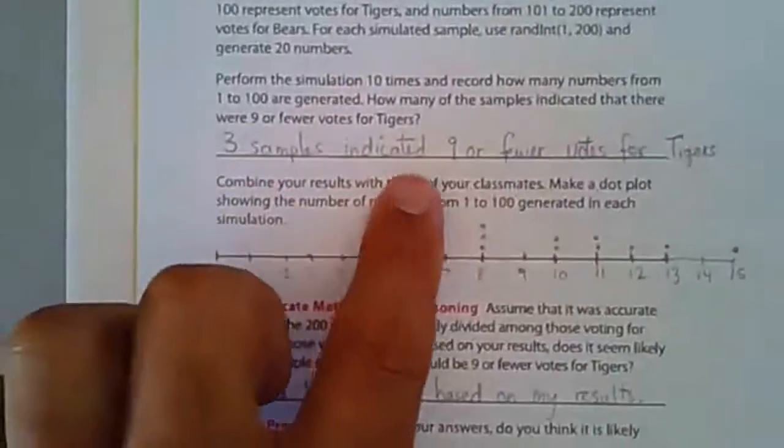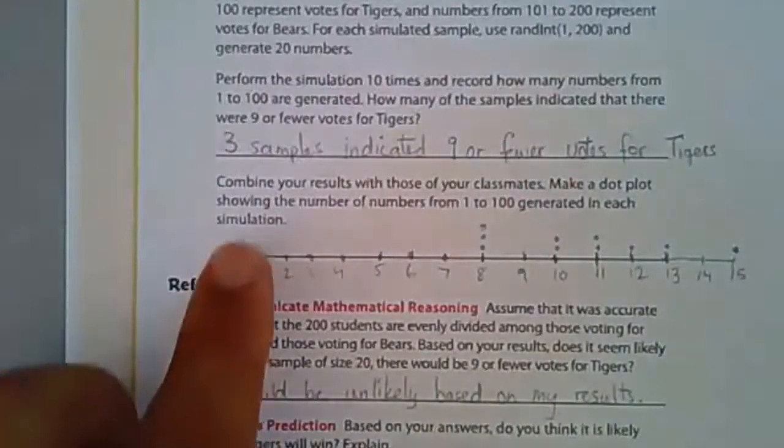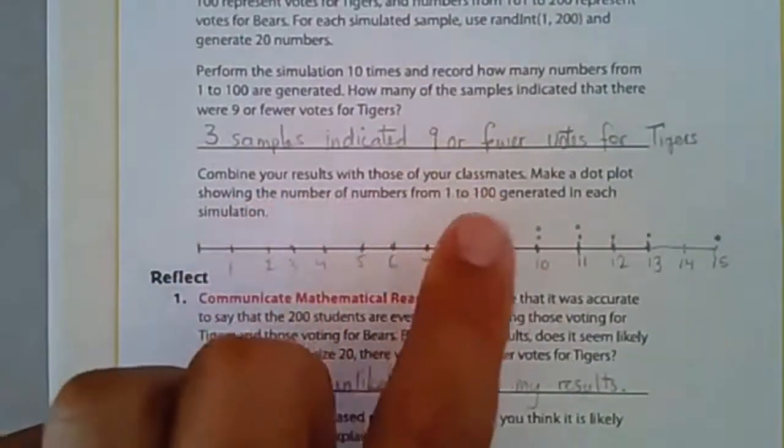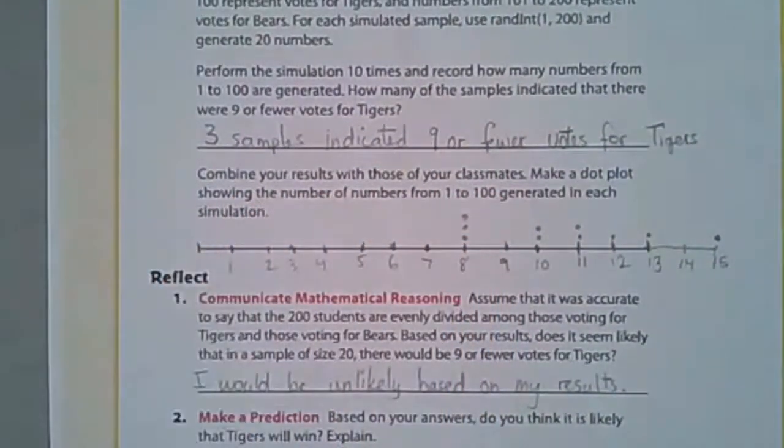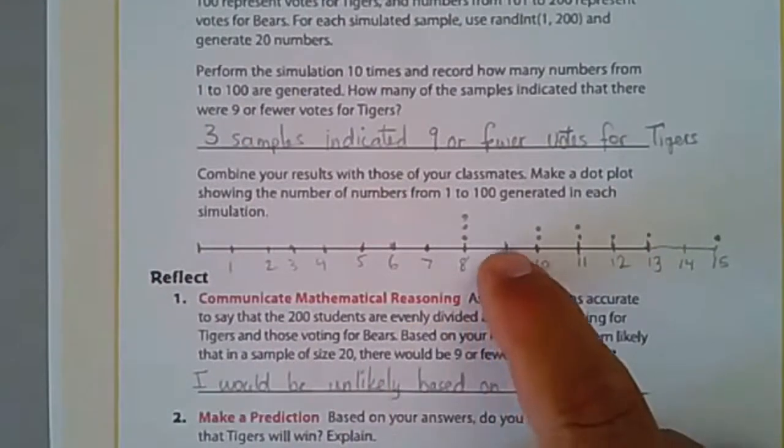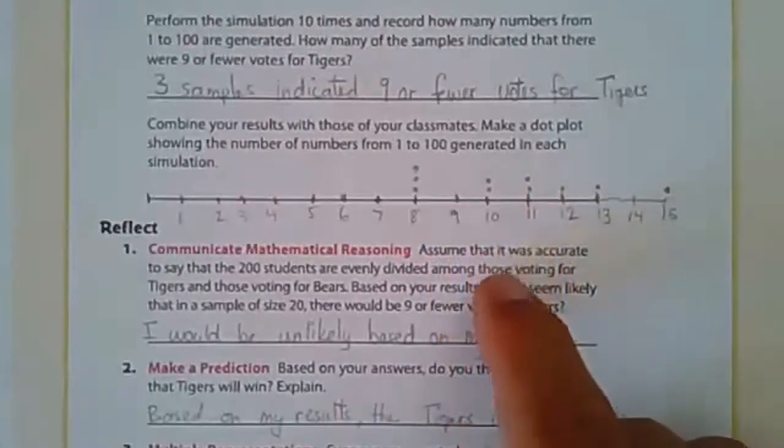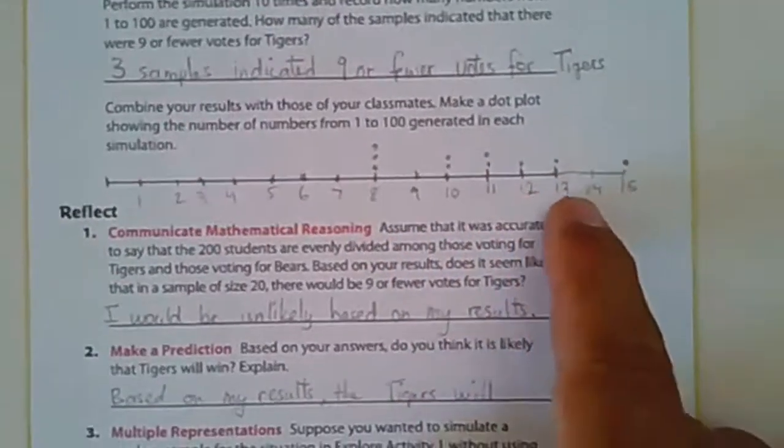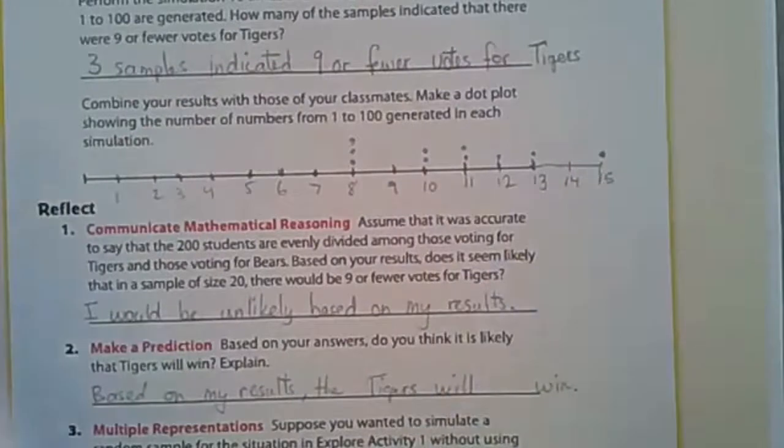So three indicated nine or fewer votes for Tigers. Next, combine your results with those of your classmates and make a dot plot. I didn't have any classmates, but I made a dot plot. Eight happened three times, 10 happened twice, 11 happened twice, 12 happened once, 13 once, and 15 once.